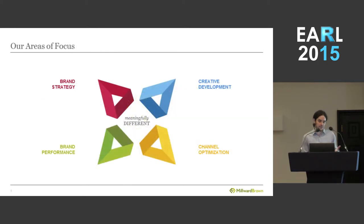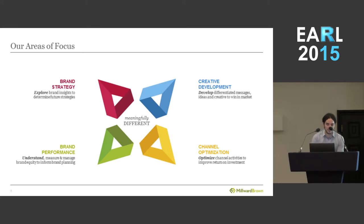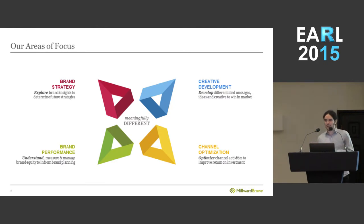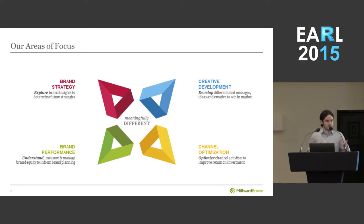Our offer is basically centered around four great pillars, which is essentially brand strategy, brand performance, channel optimization, and creative development. Brand strategy is essentially trying to figure out where you want to go with your brand as a company. Brand performance is where we help you measure, understand, and get a sense of where you are with your brand.